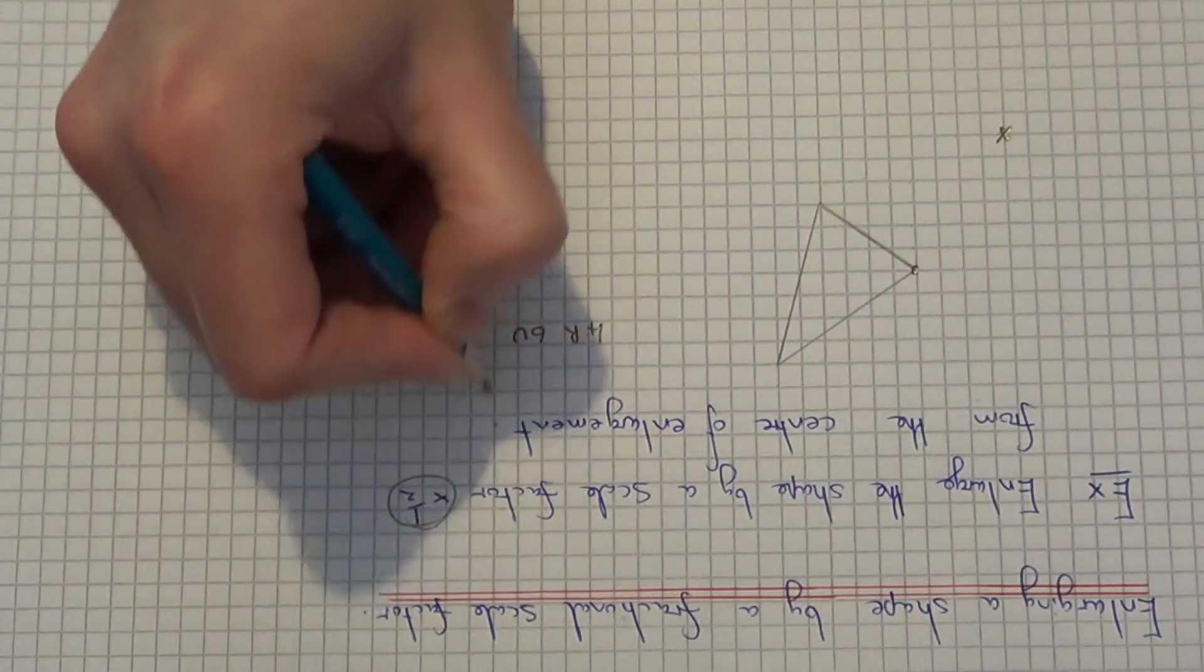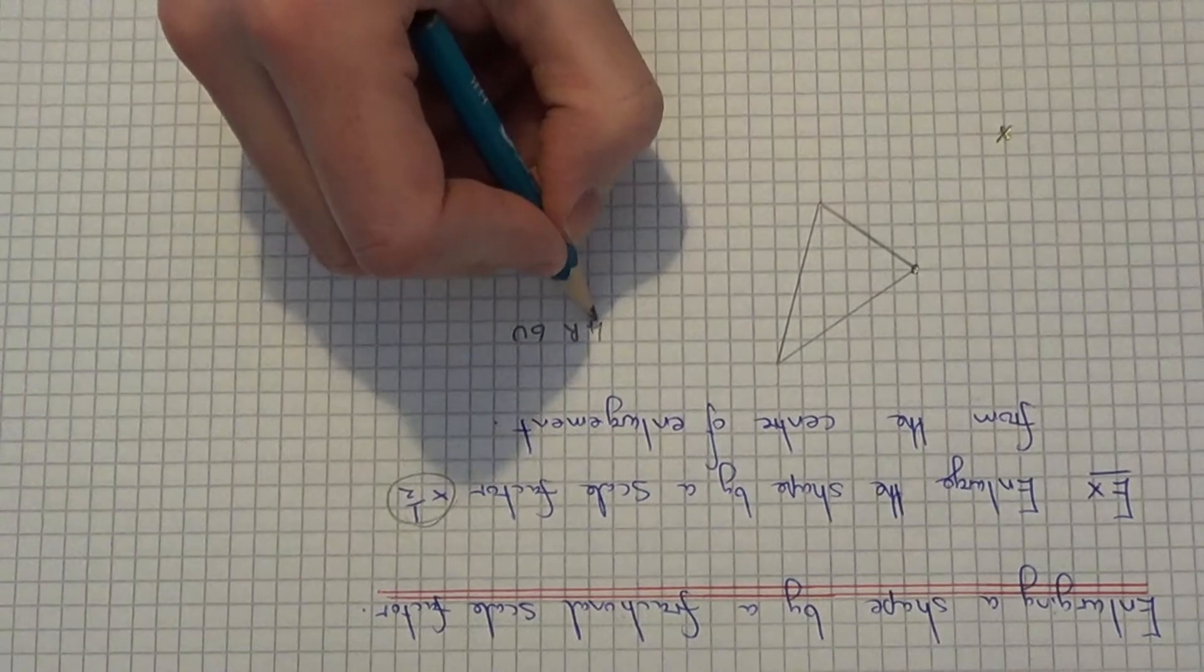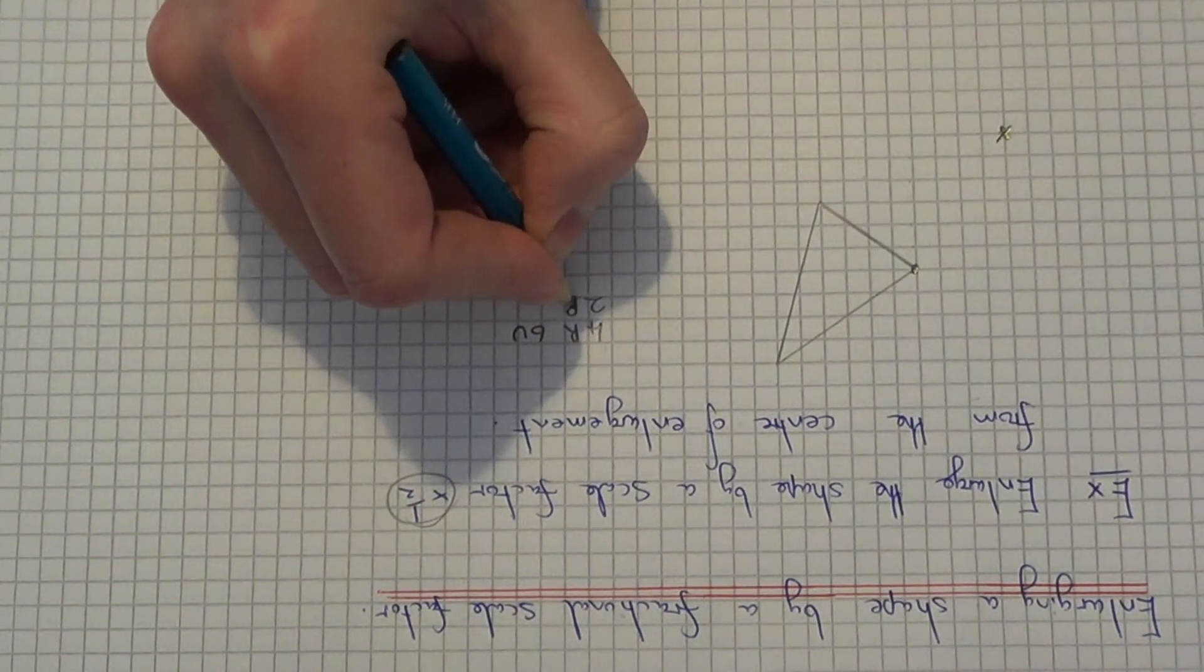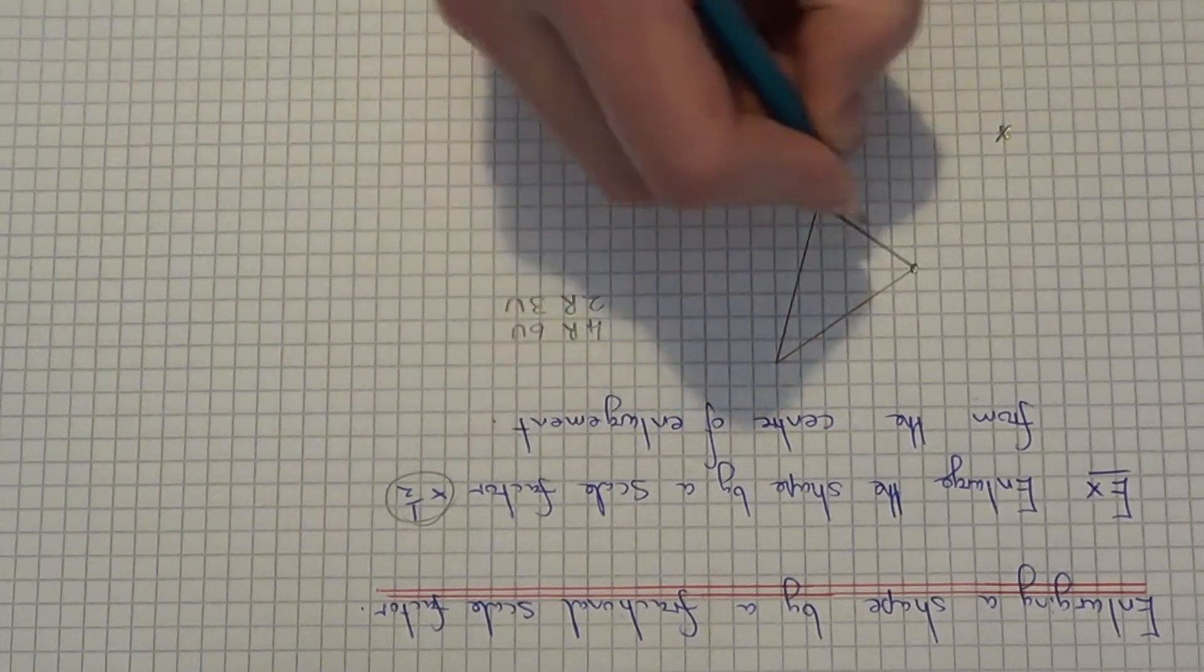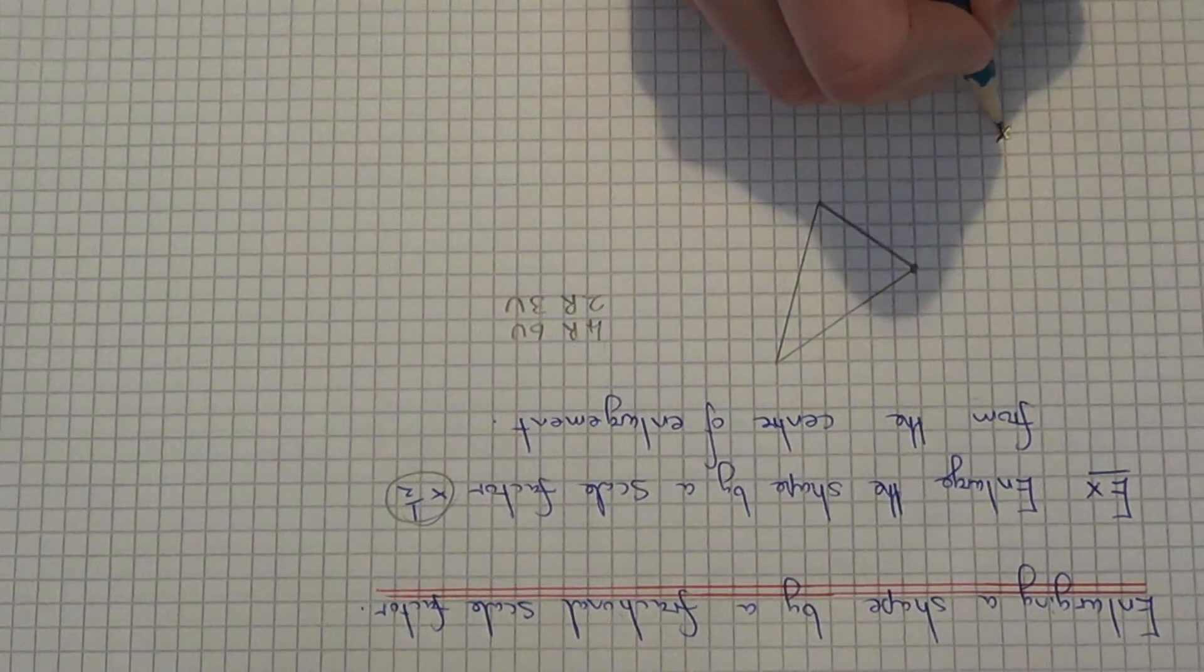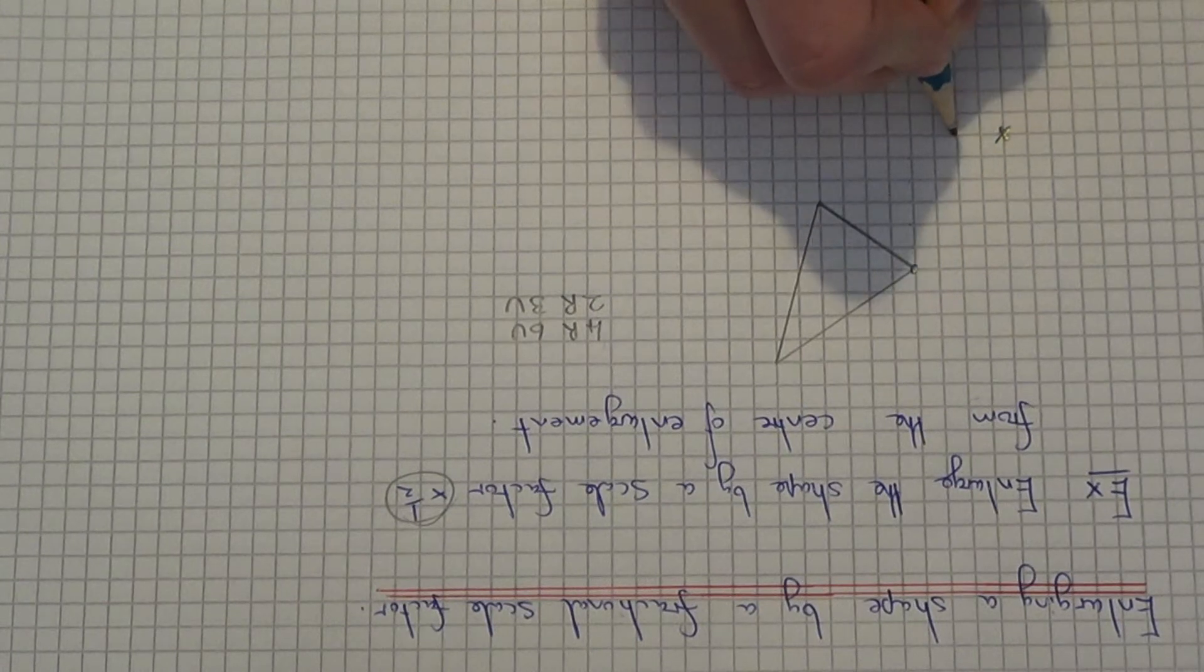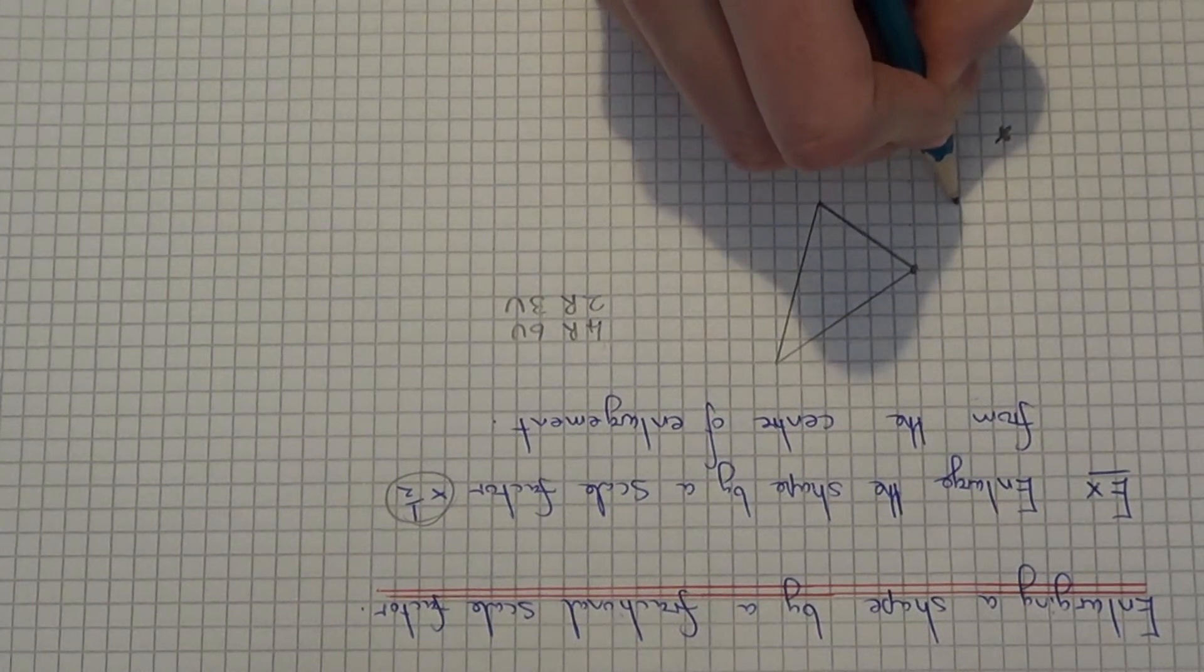So since our scale factor is times a half, I'm going to times this distance by a half which gives you 2 right and 3 up. So if I count 2 right and 3 up from the centre of enlargement, this corner becomes here.